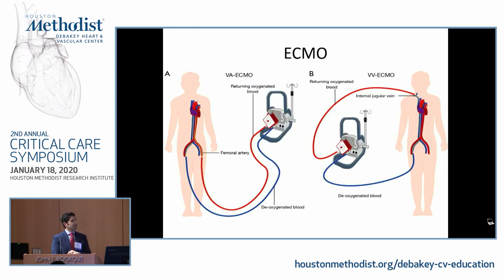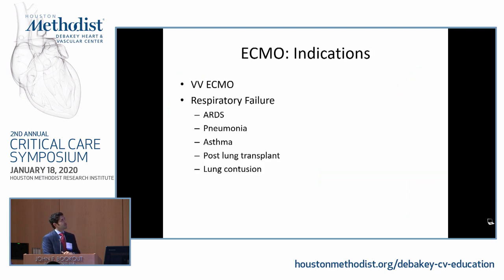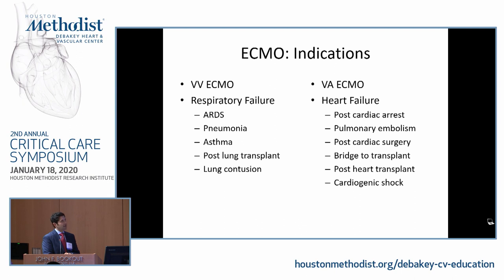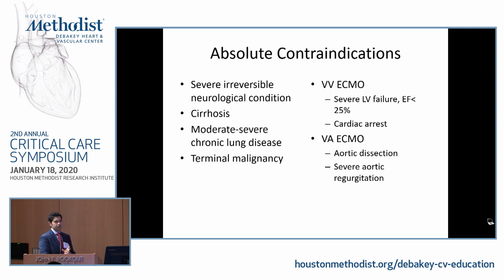The last pump is ECMO, used in two major ways: veno-arterial ECMO takes blood from the venous system through a pump and oxygenator and delivers it to the arterial system, used primarily for cardiogenic shock. Veno-venous ECMO takes blood from the venous system and returns it to the right side, used primarily for respiratory failure. Contraindications include severe irreversible causes such as neurological deficits, terminal malignancy, or cirrhosis. For cardiogenic shock, VV ECMO alone is not used; and for aortic dissection or severe aortic regurgitation, VA ECMO is avoided.